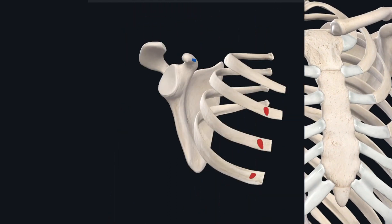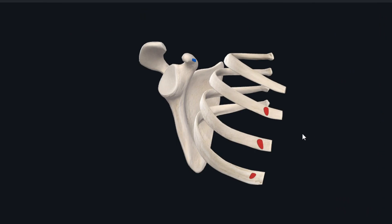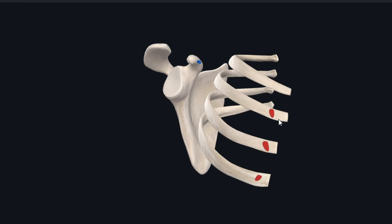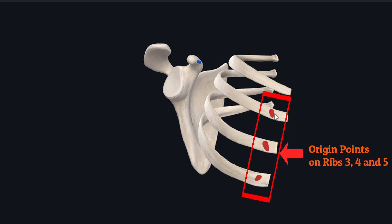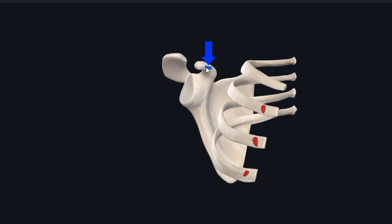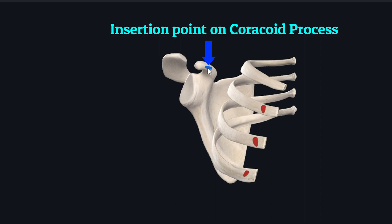Now with the muscle removed, you can see the origin and insertion points on the bones. The pectoralis minor muscle originates through three points shown in red on the anterior surface of ribs three, four, and five. It inserts on the medial side of the coracoid process of the scapula, shown in blue.